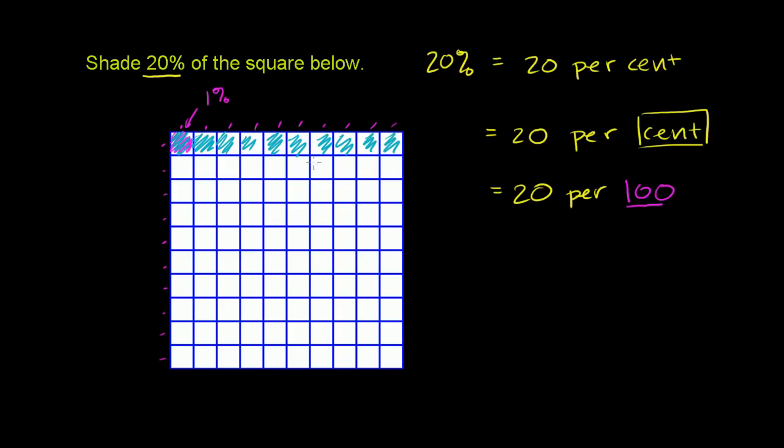And then we want to do 20, so that'll be one more row. So I can shade in this whole other row right here. And then I would have shaded in 20 of the 100 squares. Or another way of thinking about it, if you take this larger square divided into 100 equal pieces, I've shaded in 20 per 100, or 20% of the entire square. Hopefully that makes sense.